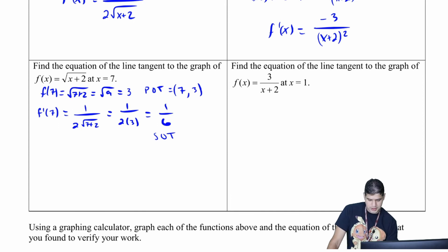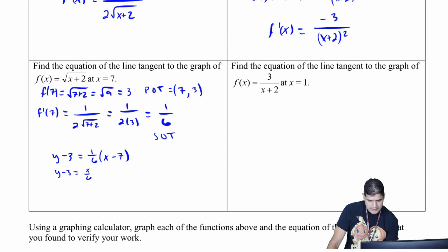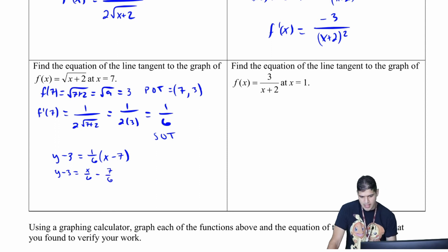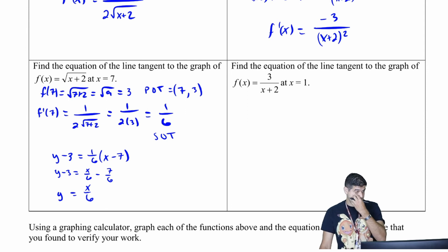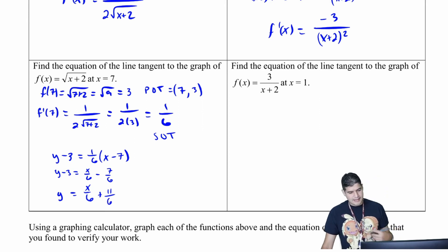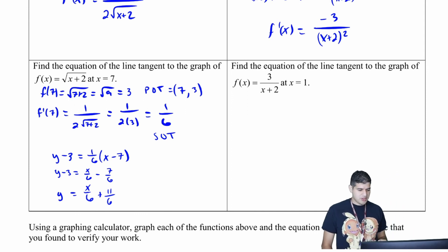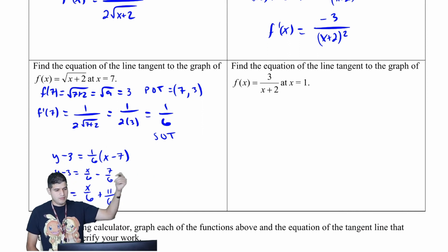Writing the equation in point-slope form: y minus three equals one-sixth times x minus seven. Converting to slope-intercept form: y minus three equals x over six minus seven over six, so y equals x over six plus eighteen over six minus seven over six, which gives y equals x over six plus eleven over six.